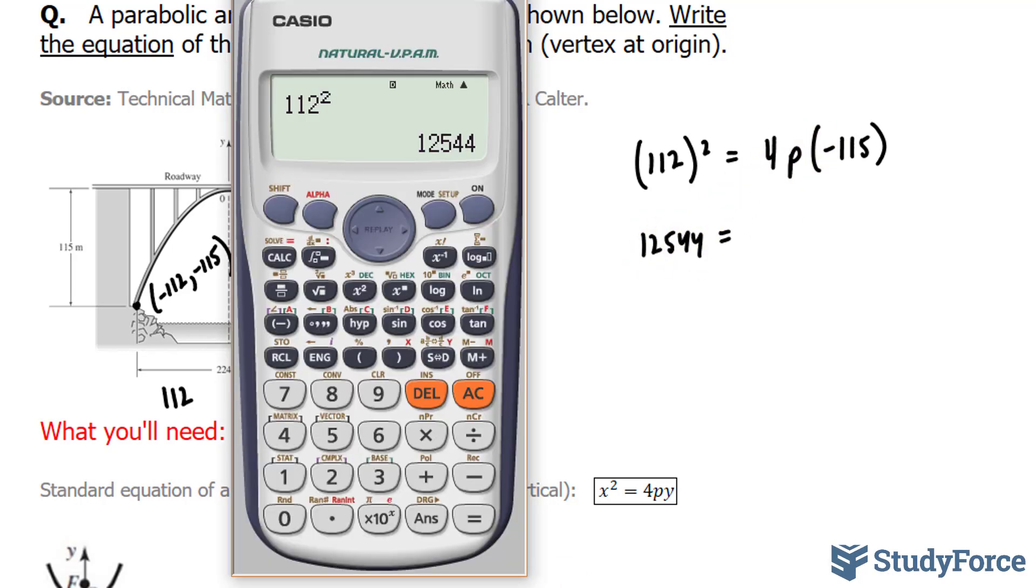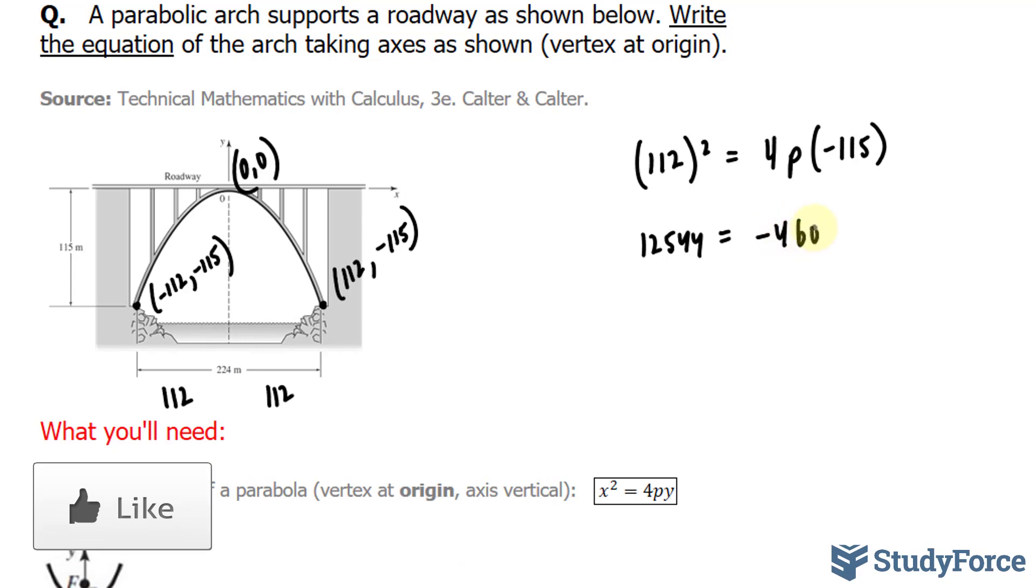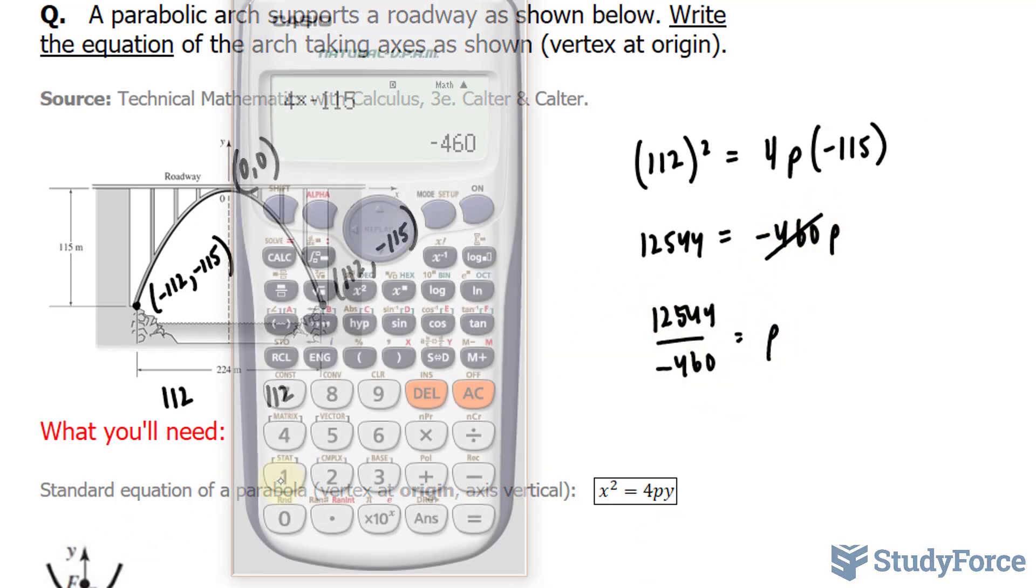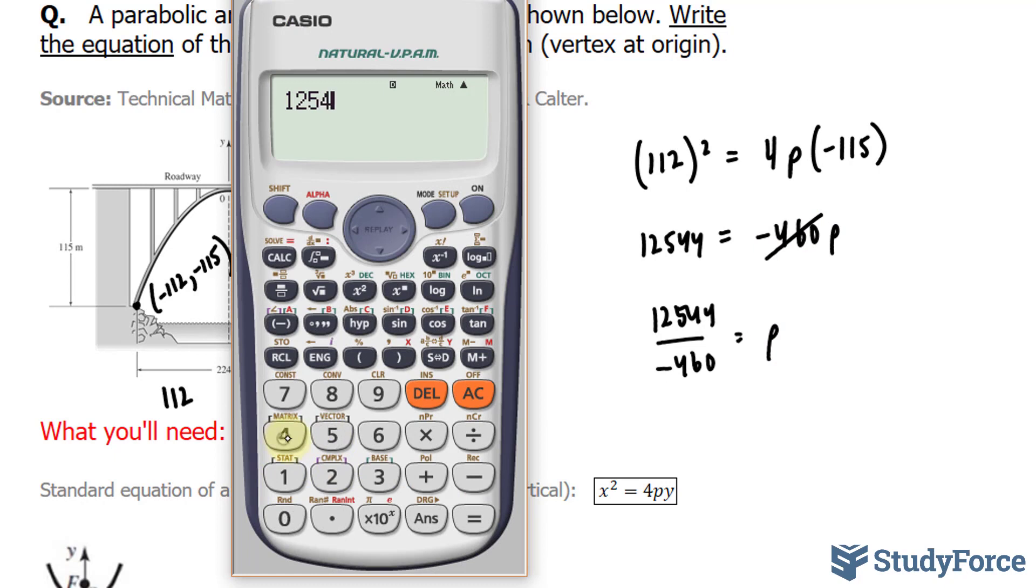On the right side, 4 times negative 115 gives us negative 460p. Divide both sides by negative 460. On the right side, this cancels out. 12,544 divided by what we just found.